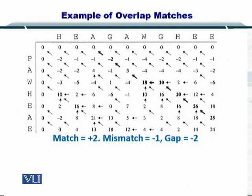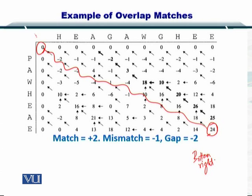Here, the matrix has been completed for you, and I'm going to talk about how the traceback strategy can be modified. For global alignment, we started from the corner element or the bottom right element and made our way to the top left element.